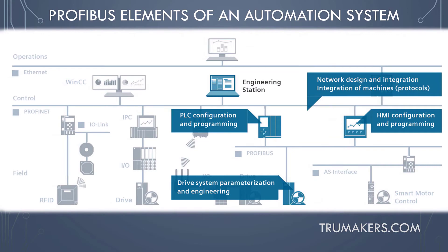The elements highlighted here include the programmable logic controller, motor drive, and human machine interface, which constitute a standalone control system without the other blocks. These elements can run independently of any other network, ensuring the automation task is performed with precision and reliability.